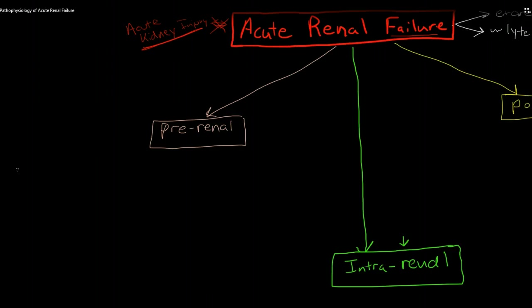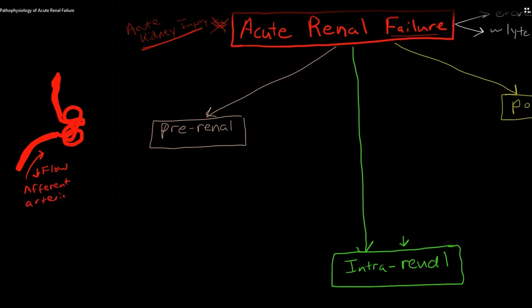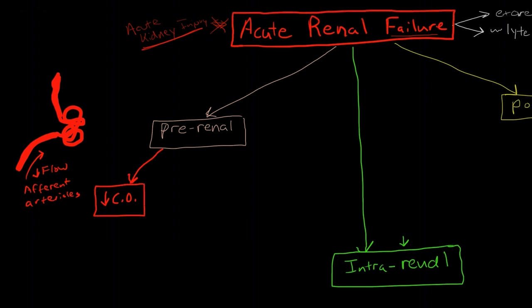Pre-renal failure refers to renal failure due to disruptions in flow to the glomerulus. If we have decreased flow to the glomerulus, this can interfere with the nephron's ability to perform its functions — specifically, decreased flow through the afferent arterioles. Several things can cause this; chief among them is decreased cardiac output. We could have decreased cardiac output because we have a patient with hypotension, or because of congestive heart failure.